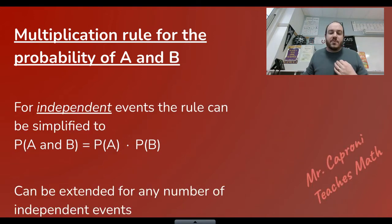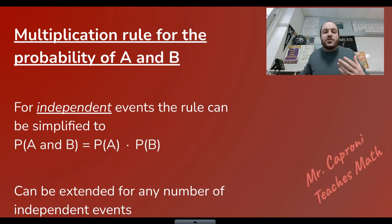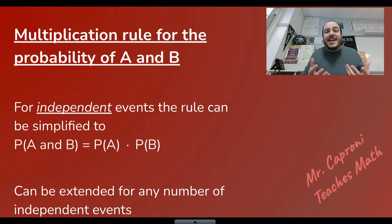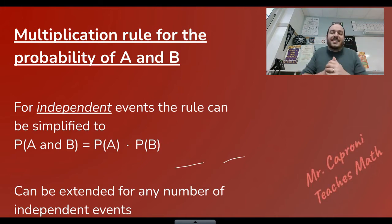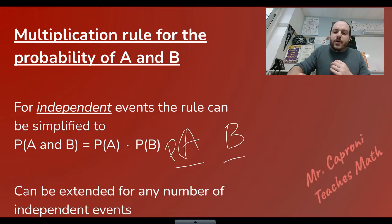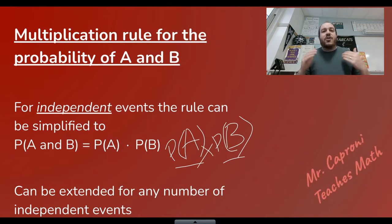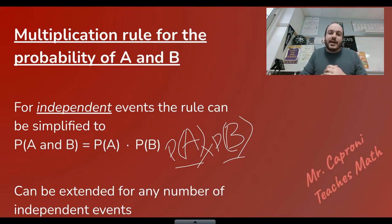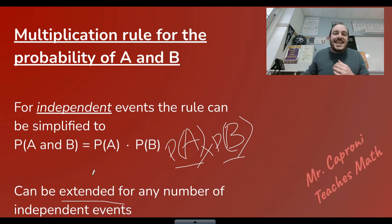There is a less general form of this rule for when A and B are independent. Independent means one has no effect on the other, so we don't have to worry about the probability of B changing — it will be exactly the same as originally. We simply have our probability of A and our probability of B, and we can just multiply them together. But that is only if they are independent.